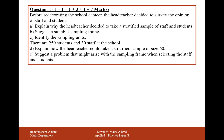Part B is suggest a suitable sampling frame, where that's just a list of everyone who could be represented in this sample. So it's a list of all the students and staff names — for example, the school register. Part C is identify the sampling units, where these are each individual element within this population. So a member of staff or a student would be the sampling unit there.